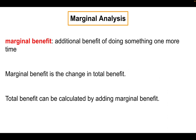Marginal benefit is the additional benefit of doing something one more time. So if I eat that next slice of pizza, what is the value I'm going to gain from that? Marginal benefit is the change in total benefit — marginal is always the change in the total. You're going to see different words after the word marginal and after total, but marginal is always the change in the total.